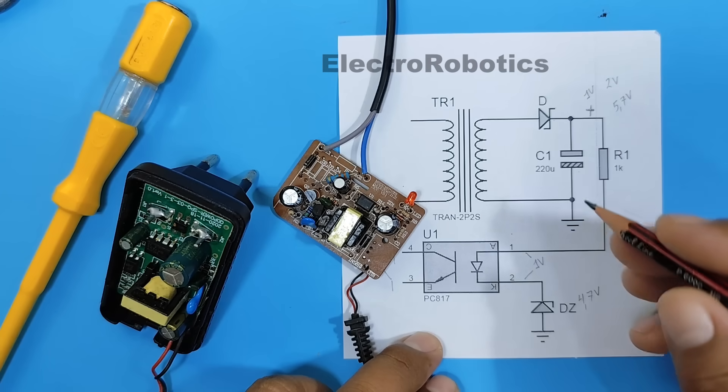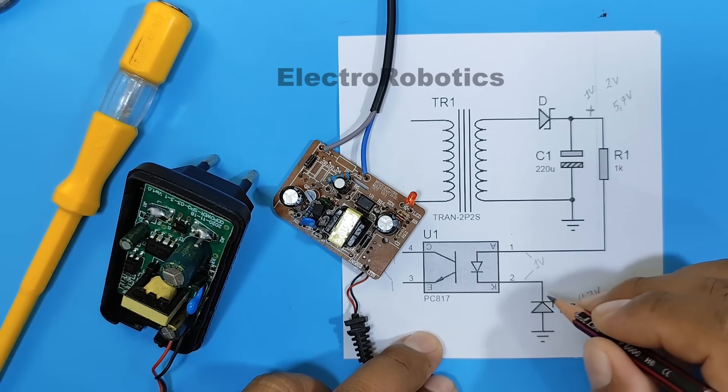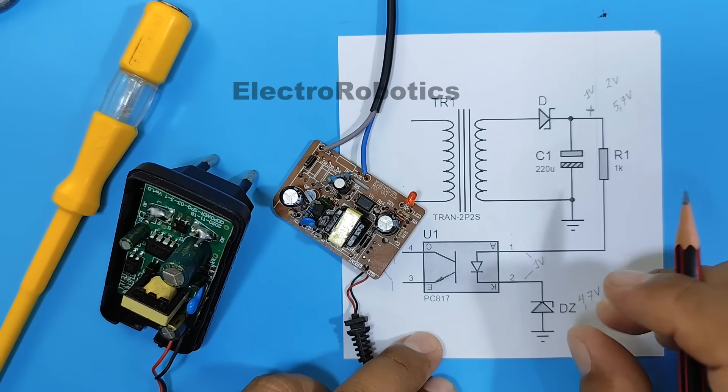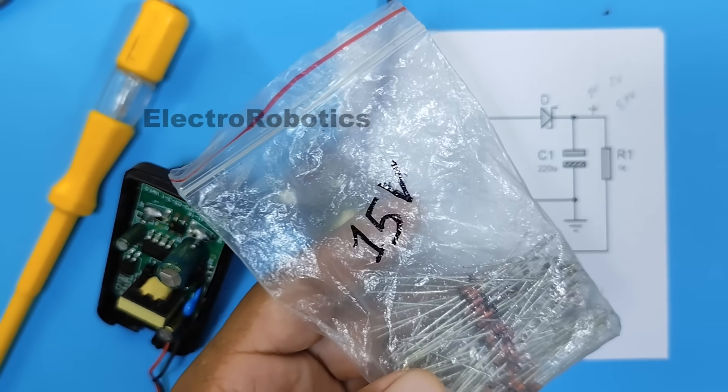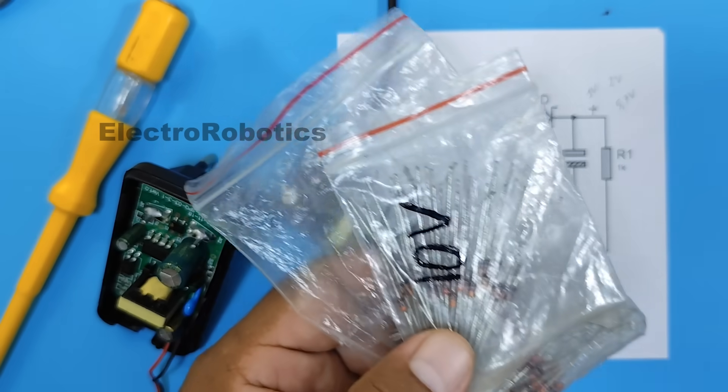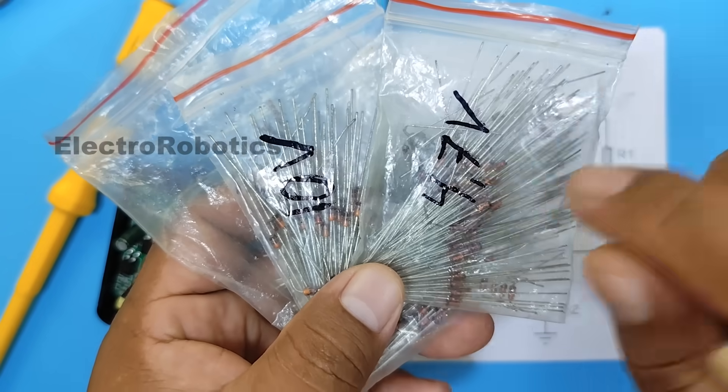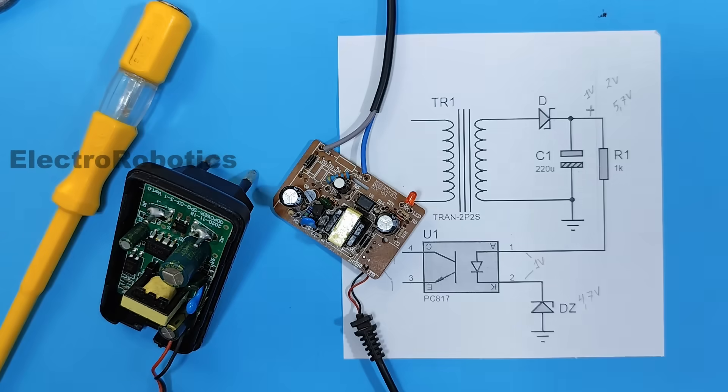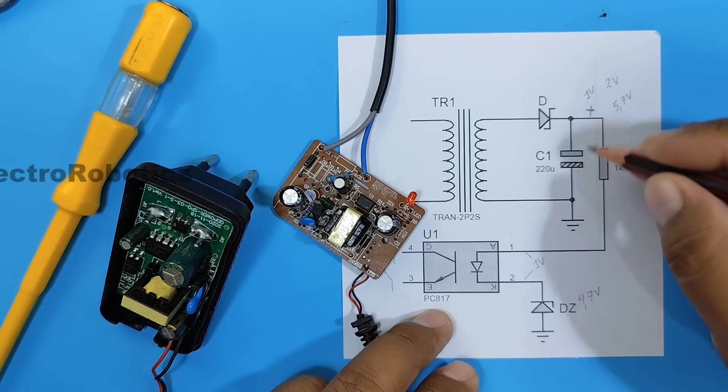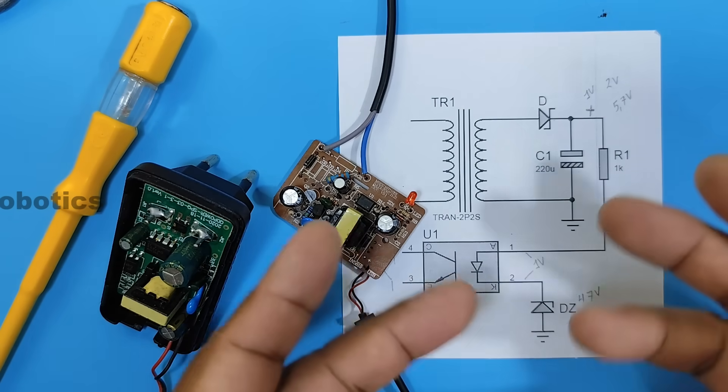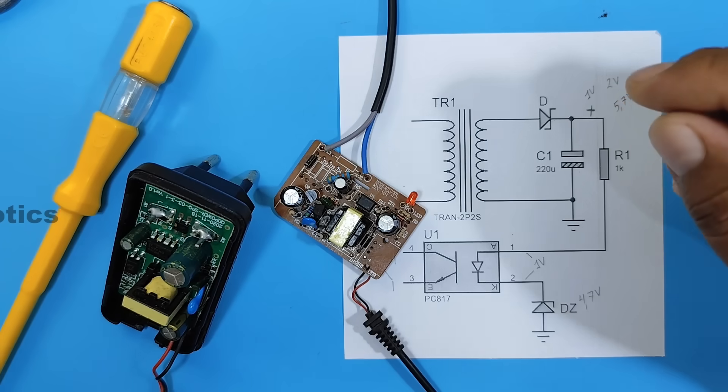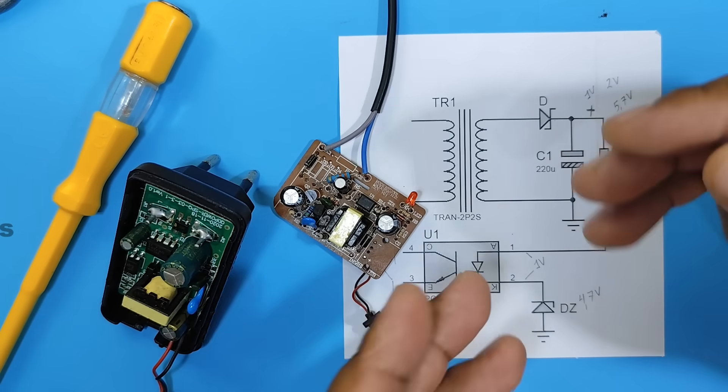So, we are going to change the Zener diode to a different value. We can use a 15 volt, a 10 volt, or a 4.7 volt diode to alter the output voltage and thus confirm what we're seeing in theory. So, let's move on to practice to confirm the theory.